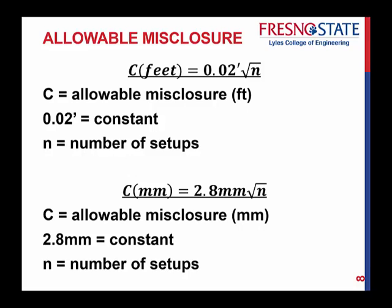This misclosure — we're only allowed to misclose by a certain amount. For our class projects and lab, C stands for allowable misclosure. The formula is C = 0.02 feet times the square root of N, where the 0.02 feet is a constant and N is the number of setups. A setup is every time you set your instrument up with a backsight and a foresight.